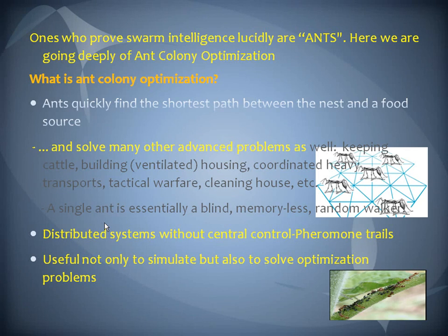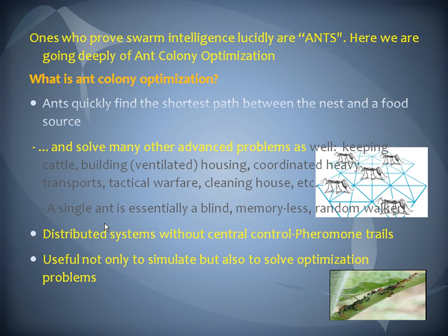But one thing is common: getting food. Ants are not individually smart, but they each play a small part in the colony — that's why they are so effective together. This is a distributed system without central control, also called a pheromone trace phenomenon, which I will describe later. This is useful not only to simulate but also to solve optimization problems.